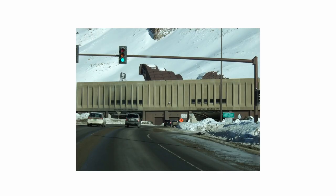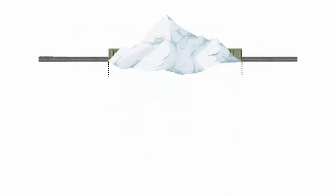The Eisenhower Tunnel west of Denver, Colorado, allows traffic from Interstate 70 to pass under the Continental Divide in the Rocky Mountains. The tunnel is roughly 1.7 miles long, and the posted speed limit is 50 miles per hour.